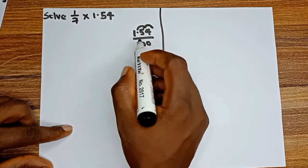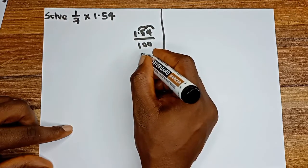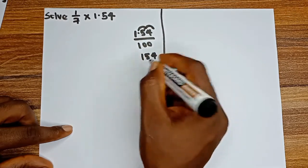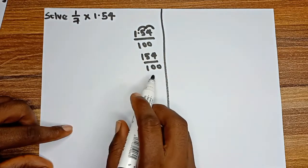So we have 100. This means since this decimal point has moved from here to here we have 154 divided by 100. So this decimal is the same thing as 154 divided by 100.